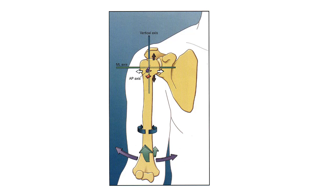Now let's match the plane of movement with the axis of rotation. Movements in the sagittal plane occur about a medial-lateral axis. Movements in the frontal plane occur about an anterior-posterior axis. Movements in the transverse plane occur about a longitudinal axis.